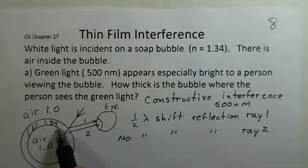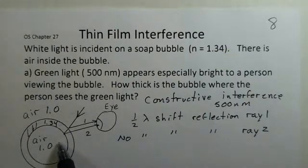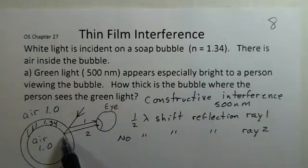We're in a high index of refraction, material 1.34, bouncing off an interface to a low index of refraction material. There's no half wavelength phase shift when that occurs.